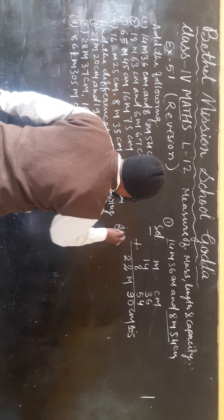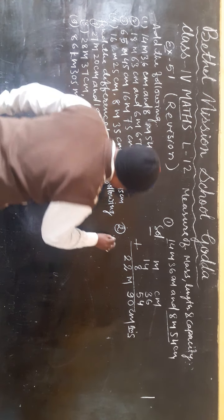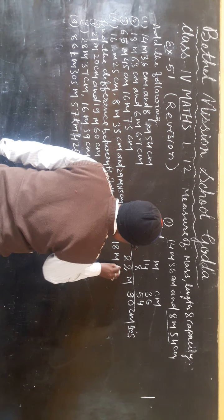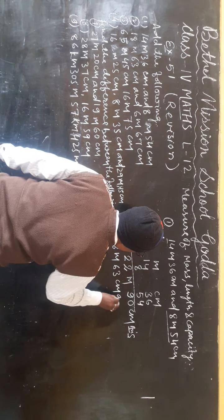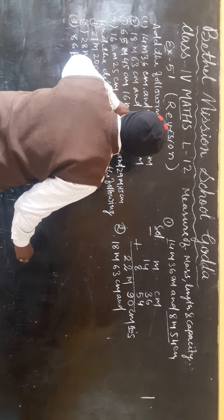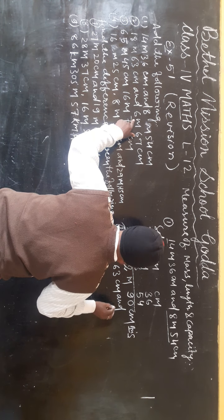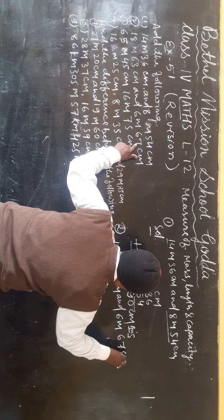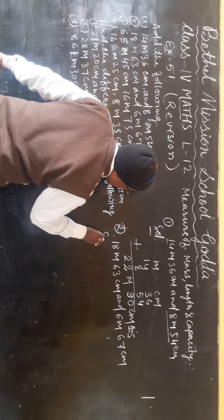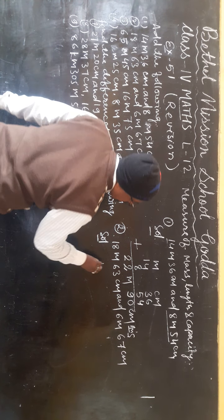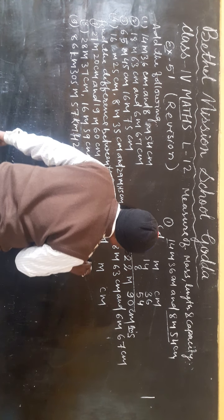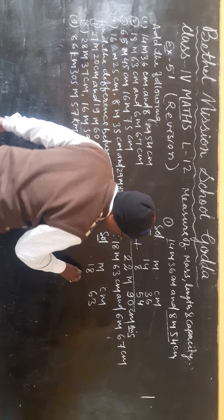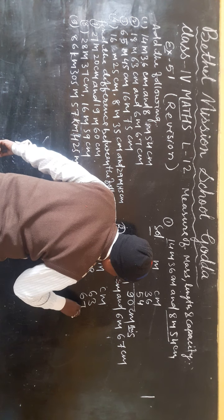Question number two. Same method. 18 meter 63 cm and 6 meter 67 cm. Write solution: meter and cm columns. 18 meter, 63 cm. 6 meter, 67 cm.